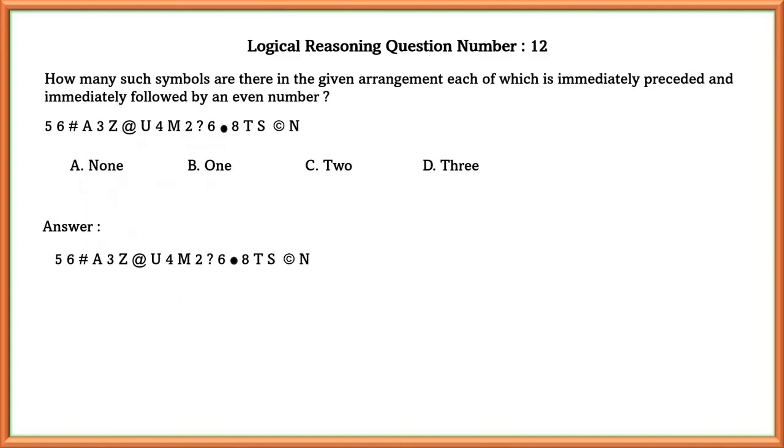Logical reasoning question number 12. How many such symbols are there in the given arrangement, each of which is immediately preceded and immediately followed by an even number? As we can see here, 2 and 6 are even numbers. And in between that, there is a question mark, which is a symbol. Similarly, 6 and 8 are even numbers. And in between that, there is a dot,